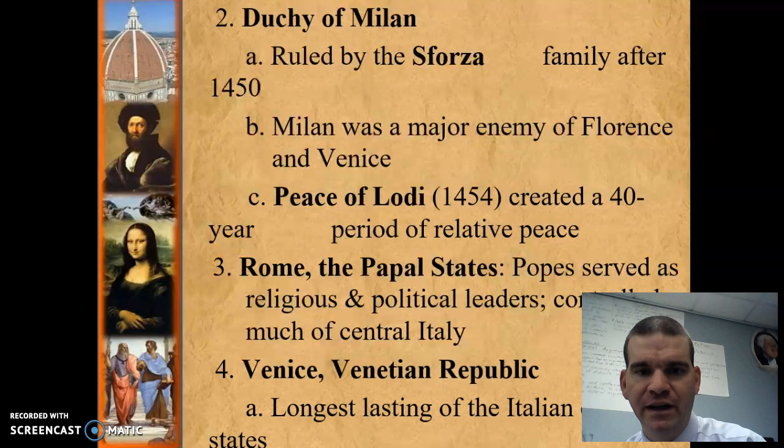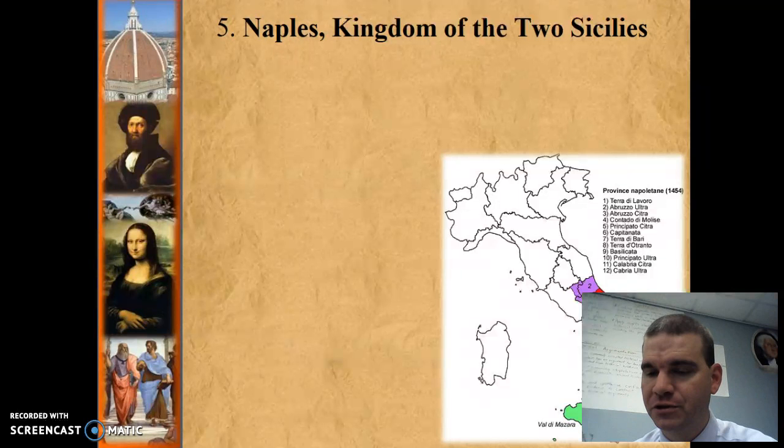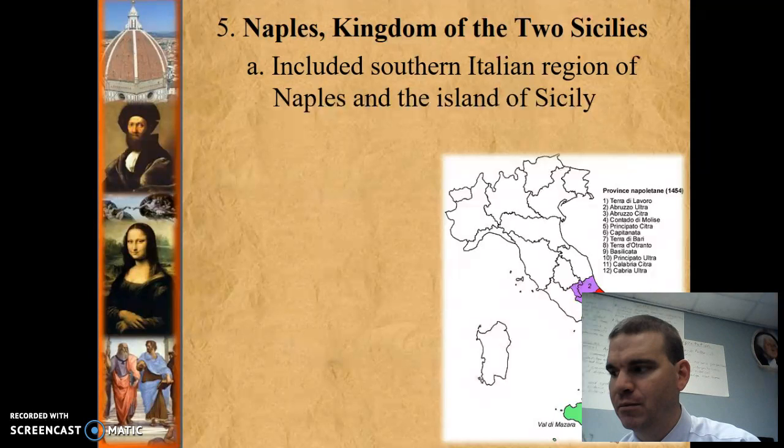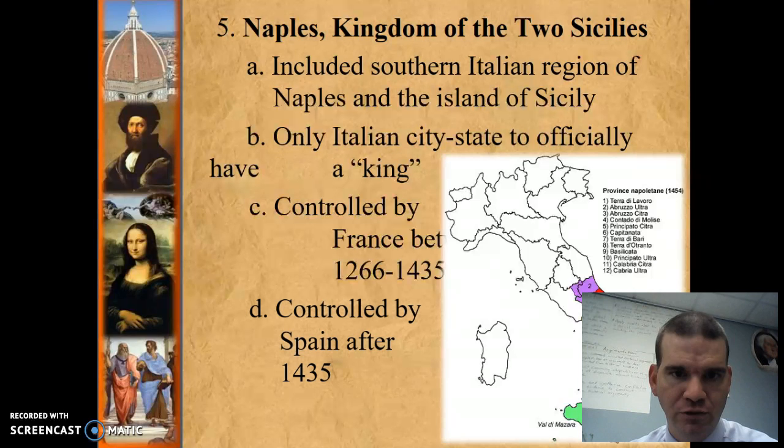Venice and the Venetian Republic was probably the longest-lasting Italian city-state. They were very wealthy, right there on the Adriatic Sea, giving them great access to trade. Finally, you have Naples, or the Kingdom of the Two Sicilies — the only city-state run by a king. They were controlled by France between 1266 and 1435, and then controlled by Spain after that.